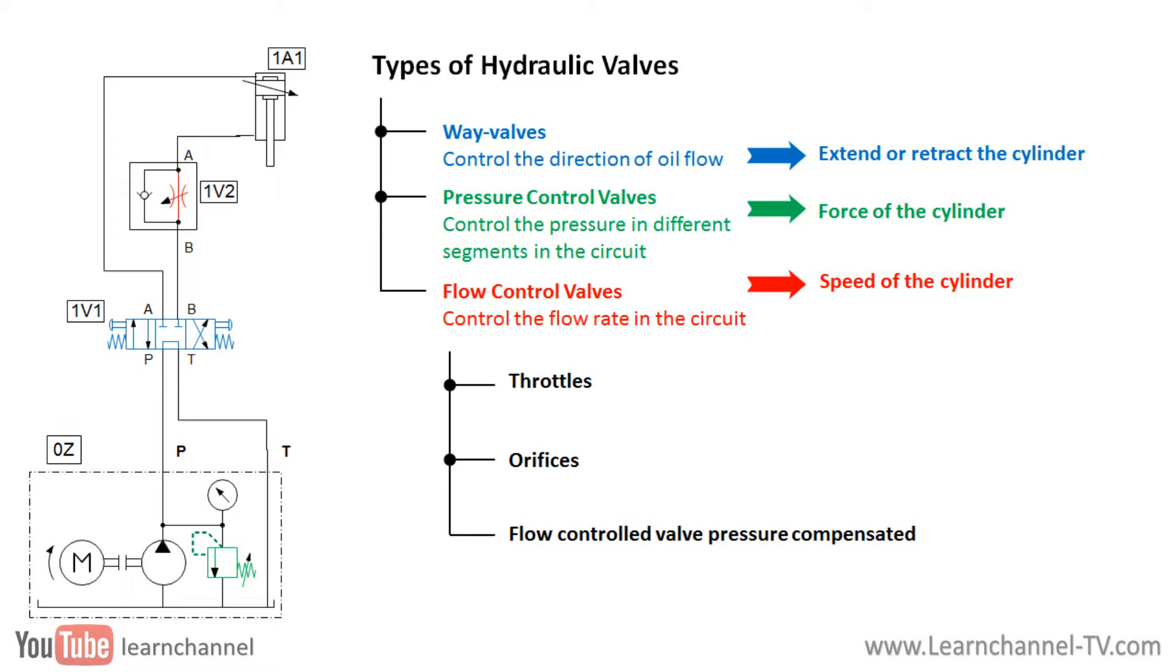Throttles and orifices are simple components that can control the flow rate across their cross-section. Flow control valves pressure compensated are more complex and can keep the flow rate constant even with a variable load. More about this device later.